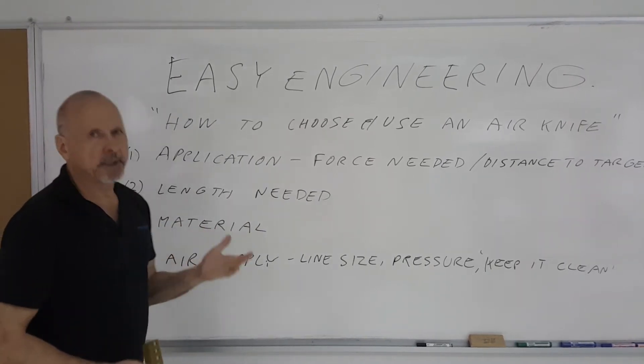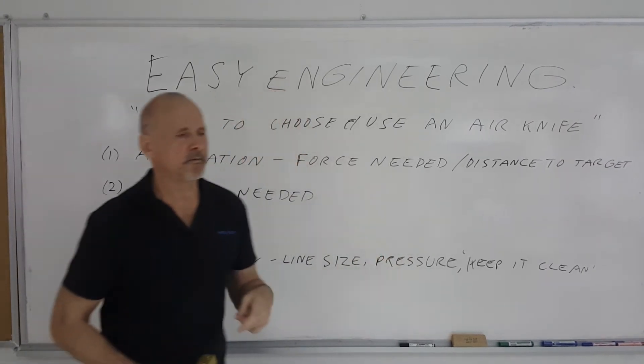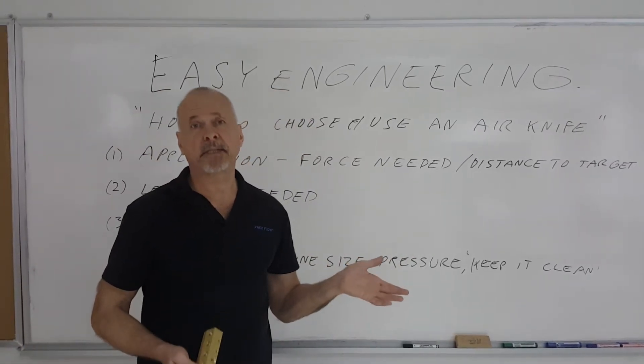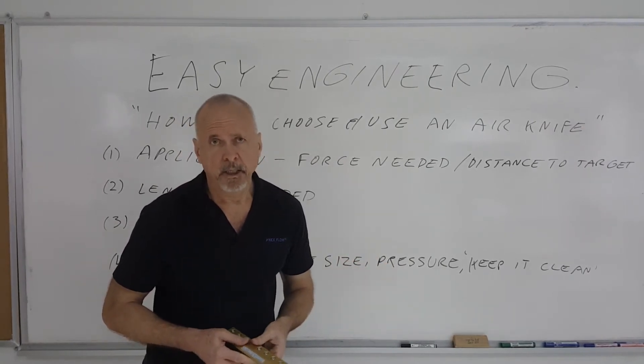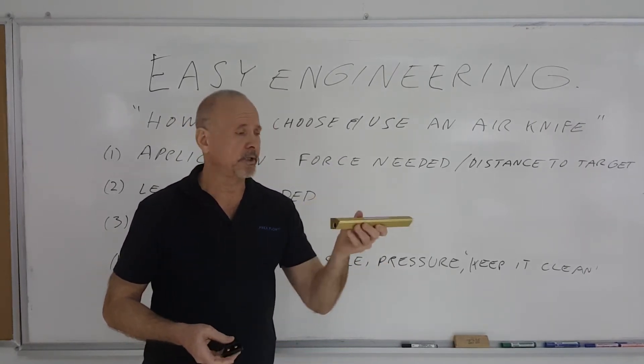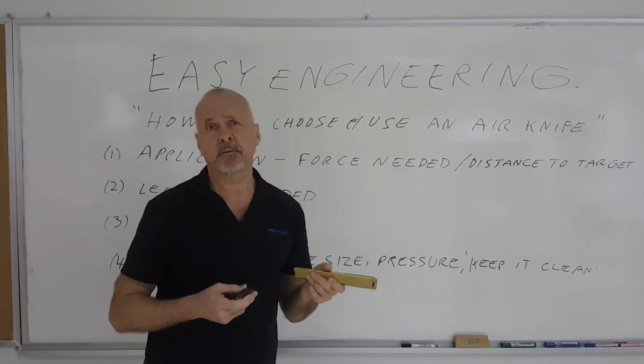The third thing you want to consider is the material. If it's a corrosive environment or if it's a food grade environment you're going to want to have stainless steel. If it's pharmaceutical you're only going to want to have 316L stainless steel and you can usually get the air knives of continuous length or individual flat jets in that stainless steel material that you need.